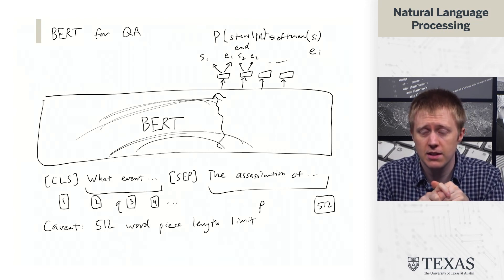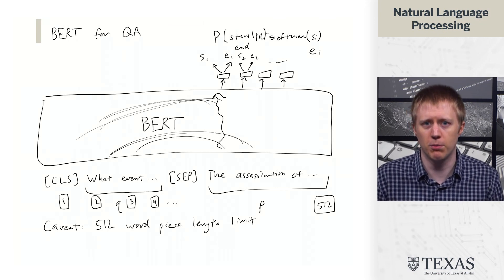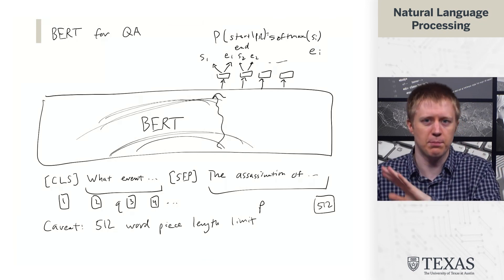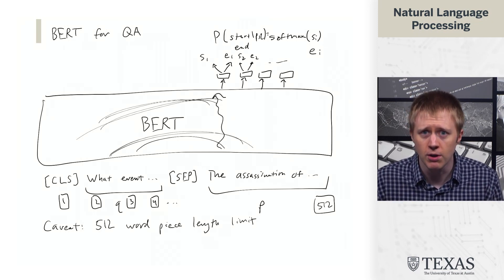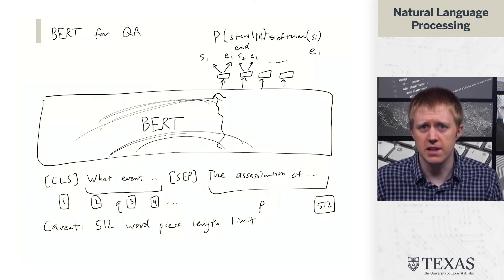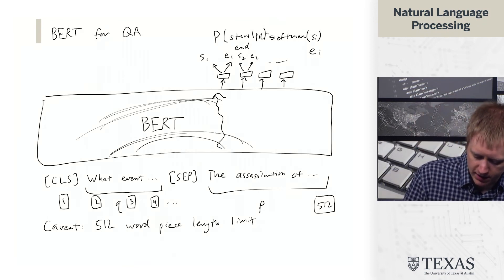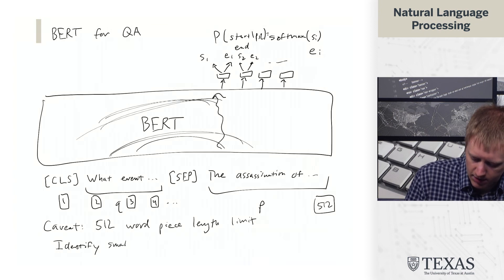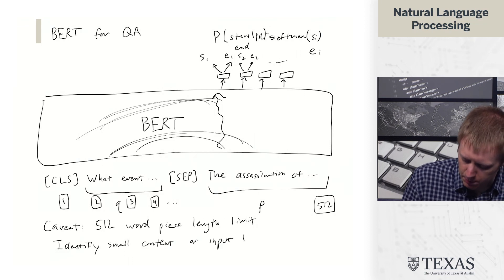For example, if you want to answer a question from a Wikipedia article, that article may very well be more than 500 words. Once you put the CLS token, question, separator, and article together, you've blown your 512 limit. The takeaway is that we need to operate within a pipeline and identify small contexts as input to BERT.